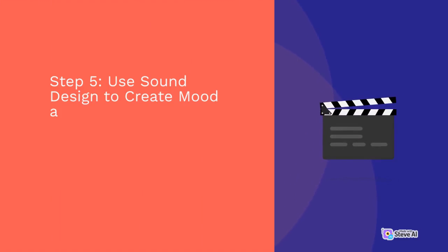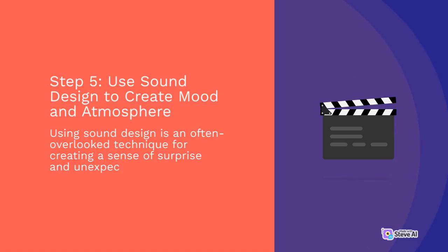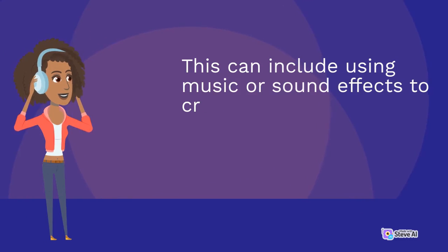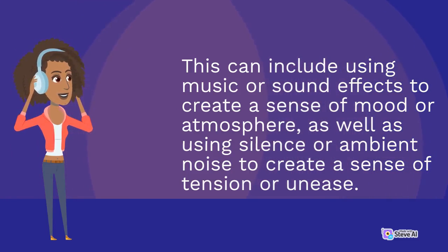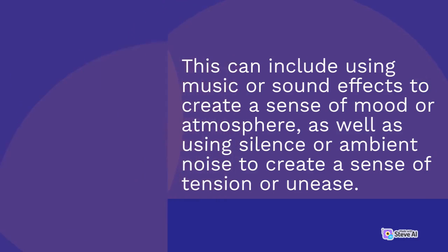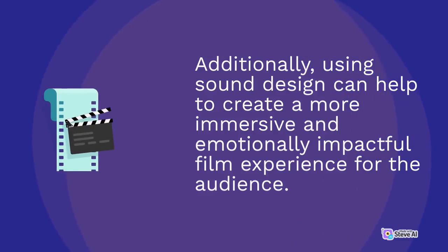Step 5 – Use Sound Design to Create Mood and Atmosphere. Using sound design is an often overlooked technique for creating a sense of surprise and unexpectedness in a film. This can include using music or sound effects to create a sense of mood or atmosphere, as well as using silence or ambient noise to create a sense of tension or unease. Additionally, using sound design can help to create a more immersive and emotionally impactful film experience for the audience.